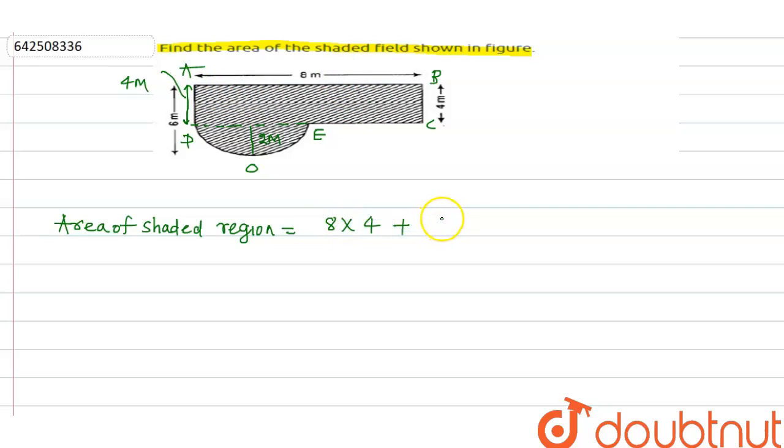4 upon 2. So what we get is 32 plus 2 pi.